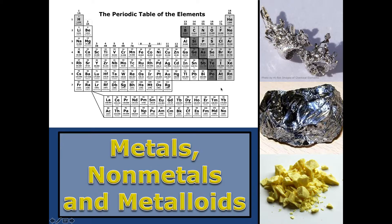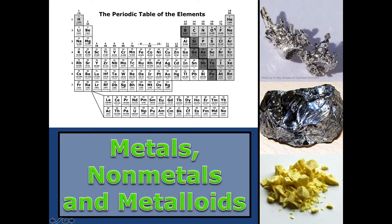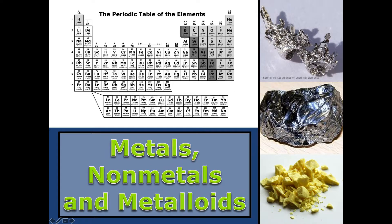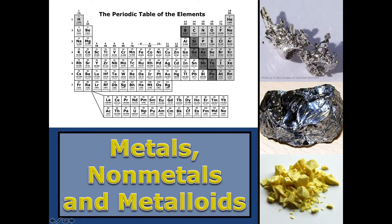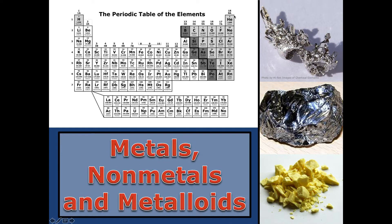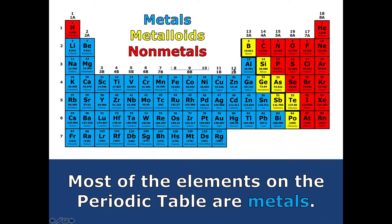Remember, metalloids have traits of both metals and non-metals. And then we have the light gray on the right side — these are the non-metals. And then we have our gases on the far right, which is group 18, and they are the inert noble gases.